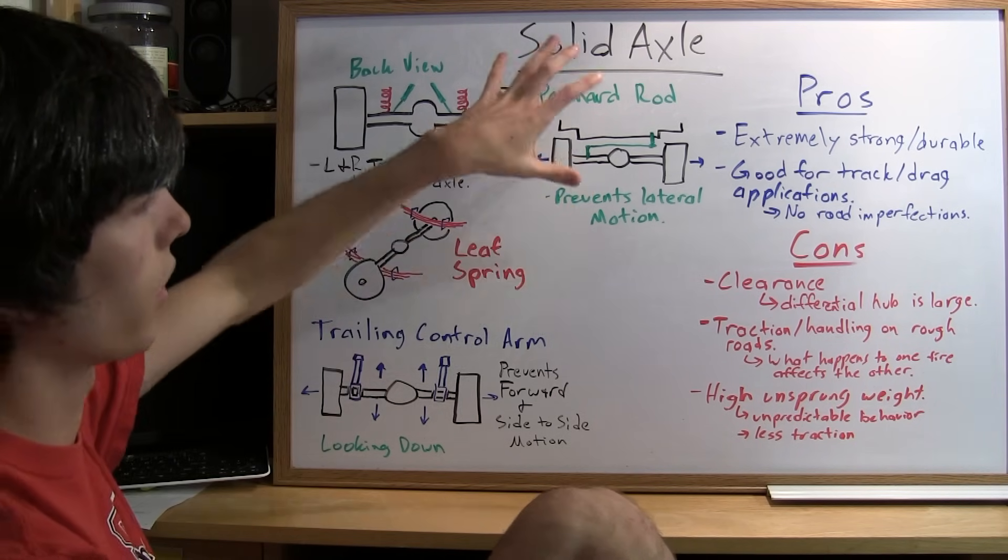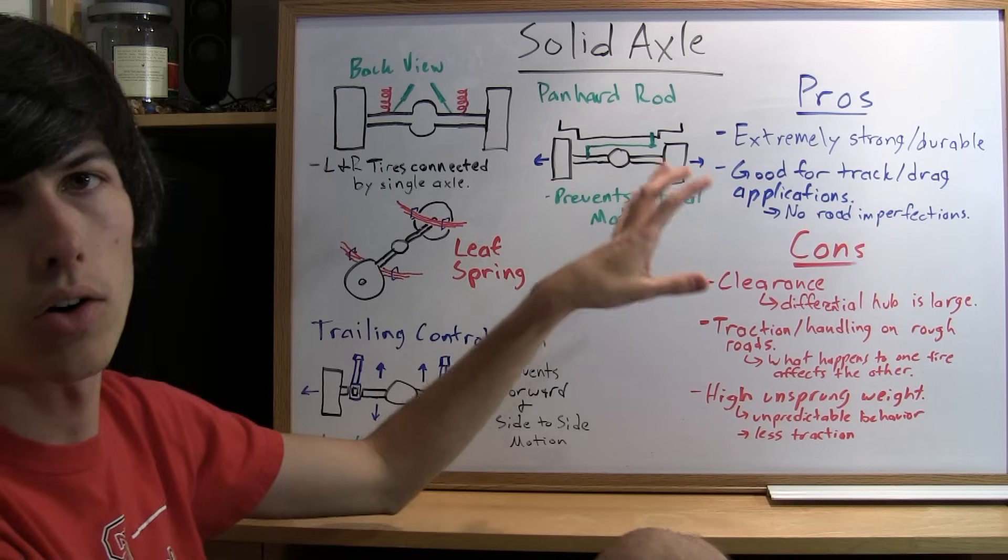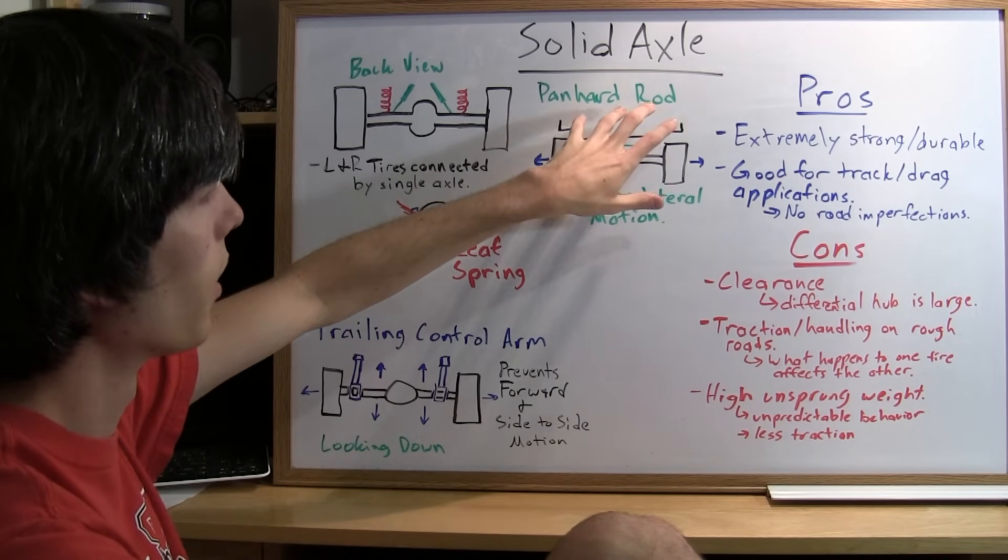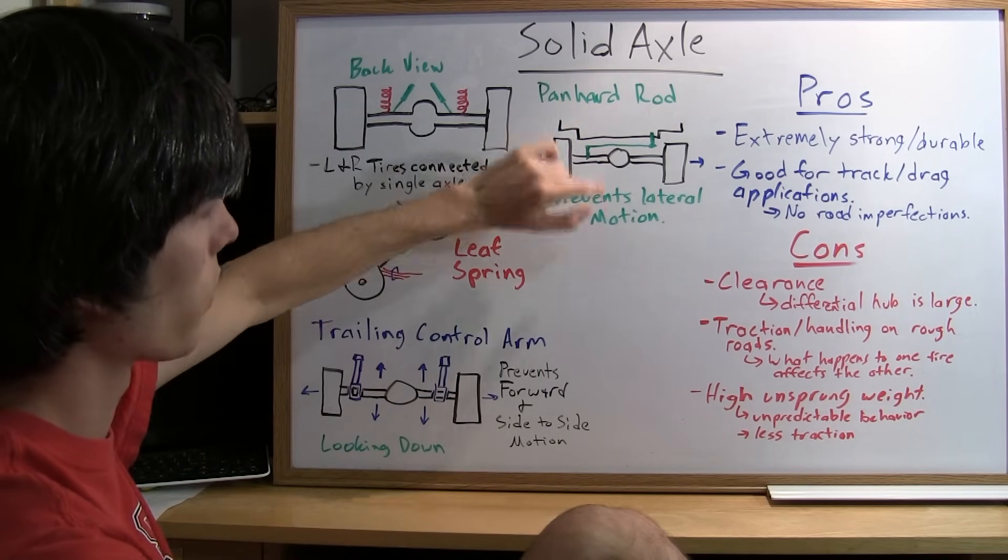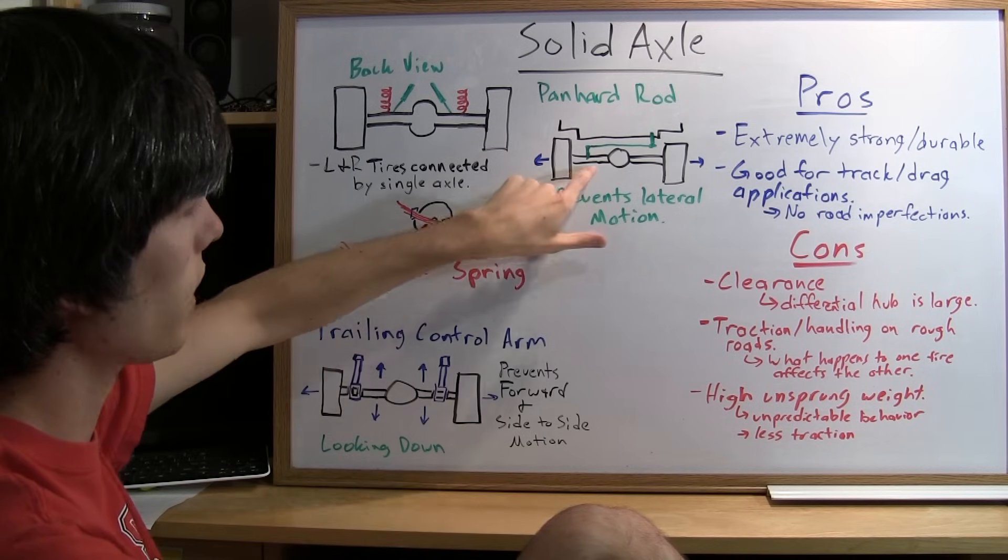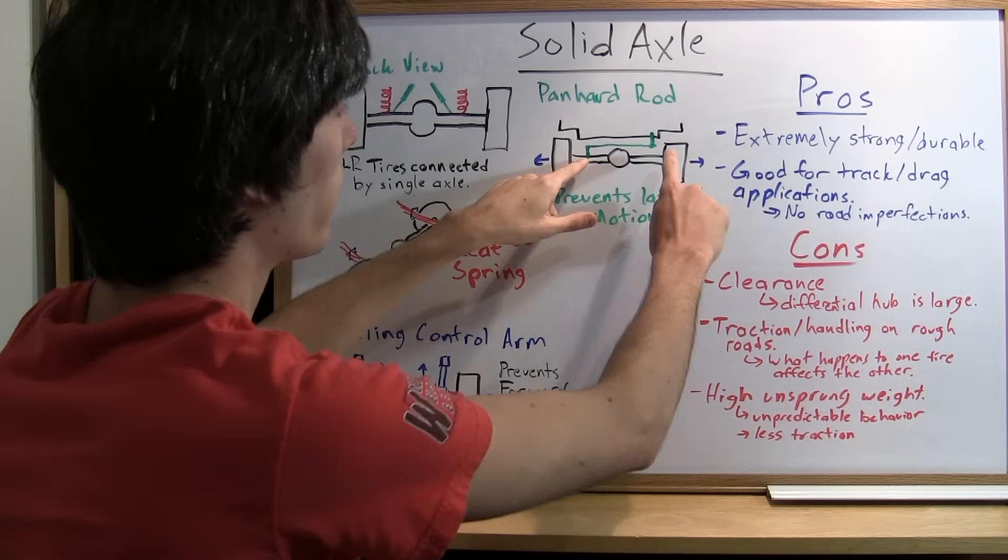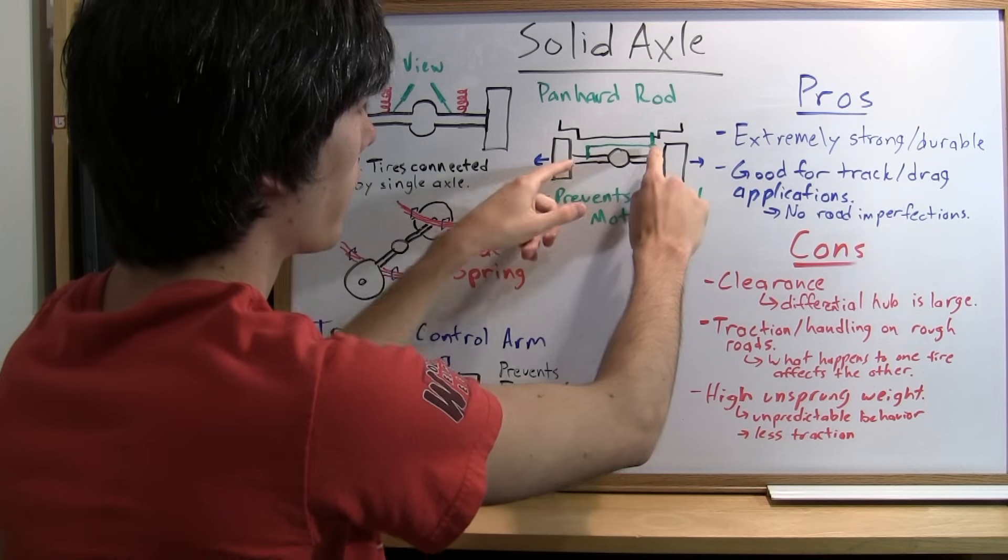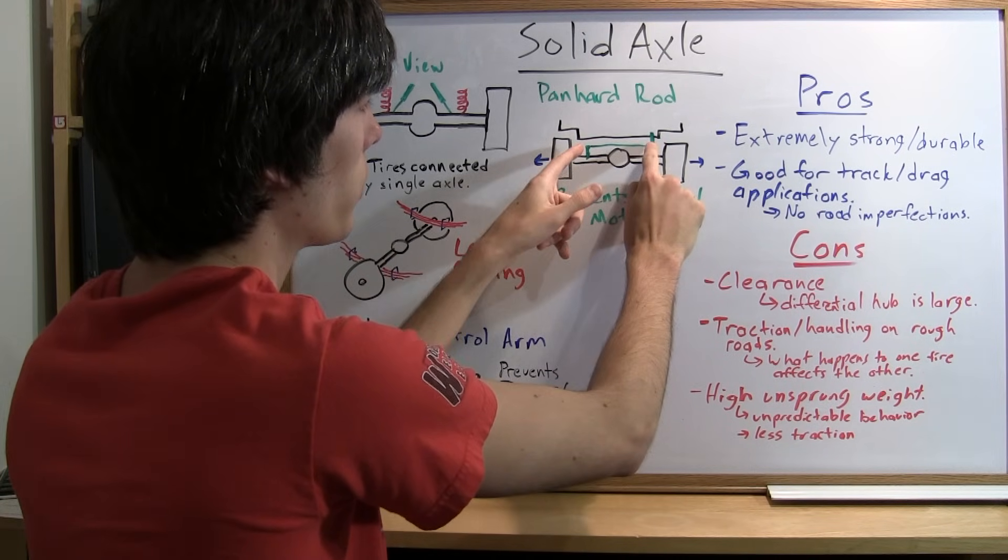Another option which is used on a lot of big trucks is called a panhard rod. What a panhard rod does is it connects the body of the car or the frame to the axle. It's got these two connections here: one to the body and one to the axle. And then it's got this rod called a panhard rod which is connected in between.